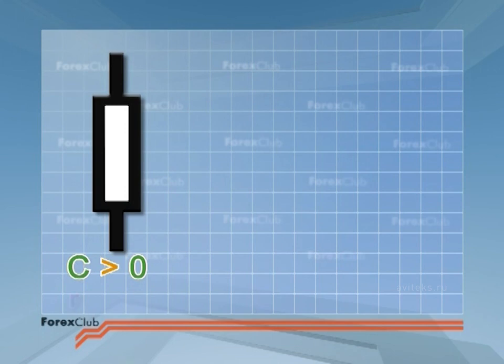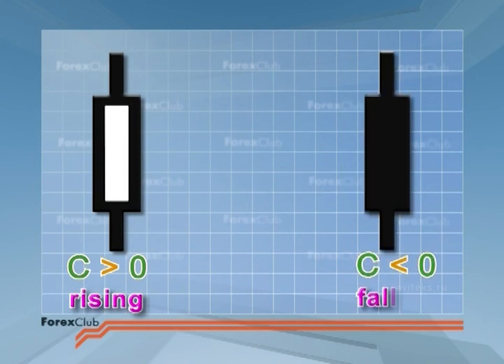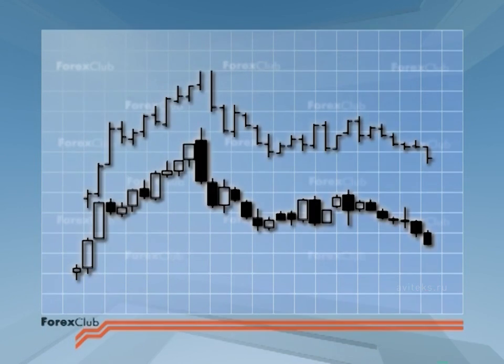If close is greater than open, it means that price has risen over the period and the candlestick has a white body. If close is lower than open, it tells us that price has fallen over the period and the candlestick is black. This color change makes the candlestick chart more immediate and easier to interpret than the traditional western bar chart.